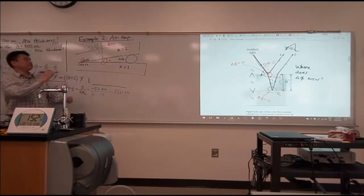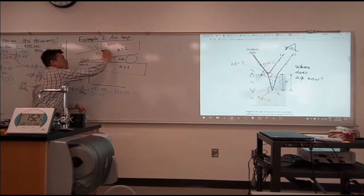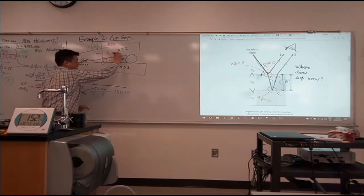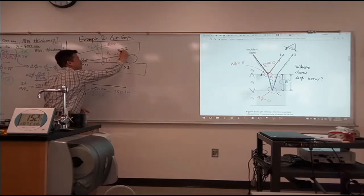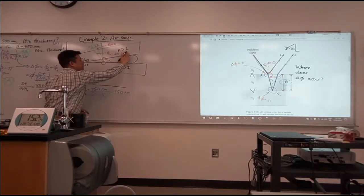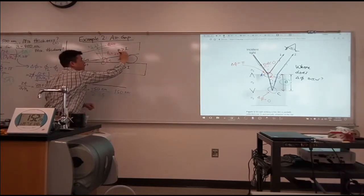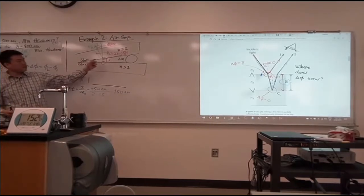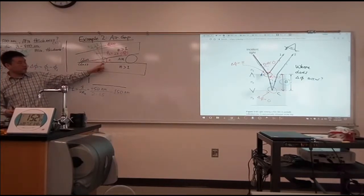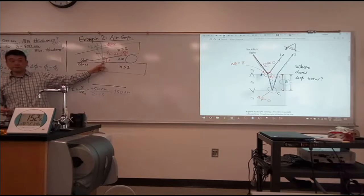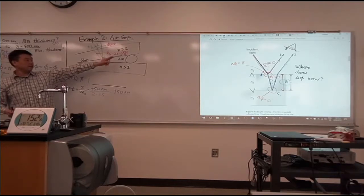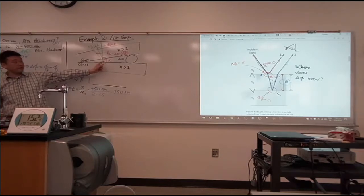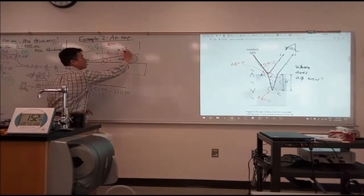So beam two, it would get phase shift due to the additional length. So that would be 2π, now I'm remembering it, not lambda over n, the distance, 2t over lambda. Now, but watch it out for beam two. On this reflection, is there a phase shift? Yeah, it's going from smaller to larger index of refraction. So there's going to be a phase shift here. So plus π.